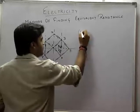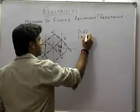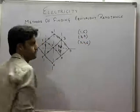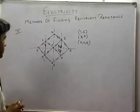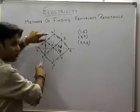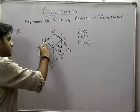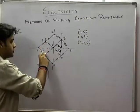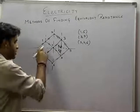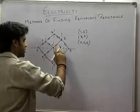Ab humko batana hai kaun kaun se points hain — 1, 5 ye equipotential pe hain; 3, 7 aur 2, 4, 6 — ye saare equipotential pe hain. That means ki jab 1 aur 5 equipotential pe hain, to in dono ke beech mein koi bhi current flow nahi kar sakta. That means ki is resistance ko mein hata sakta hoon — jab current hi nahi flow kar raha, to resistance ka koi matlab bhi nahi banta. Ye wala hata sakta hoon, ye wala resistance bhi mein hata sakta hoon.